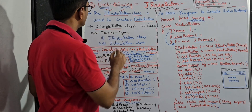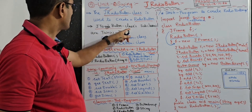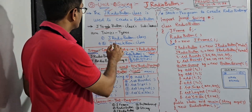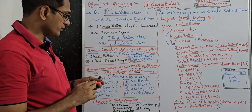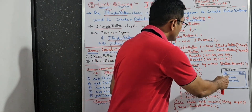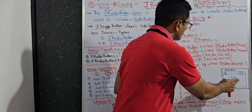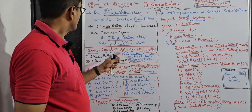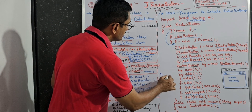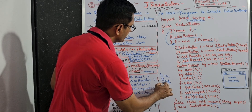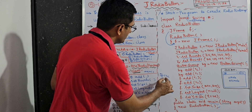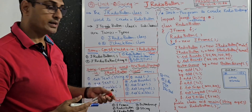JToggleButton is also a class — J means Java, toggle button class. It has two subclasses: one is JRadioButton, which we are discussing now, and the other is JCheckBox, which I will create in the next video. With radio buttons, if you click on one, the other will be disabled — if you click on male, female will be disabled, and vice versa. With checkbox, you can select all items — for example, your qualification: SSC, Inter, Degree, B.Tech, M.Tech — you can check all. That is about checkbox, which we will create in the next video.